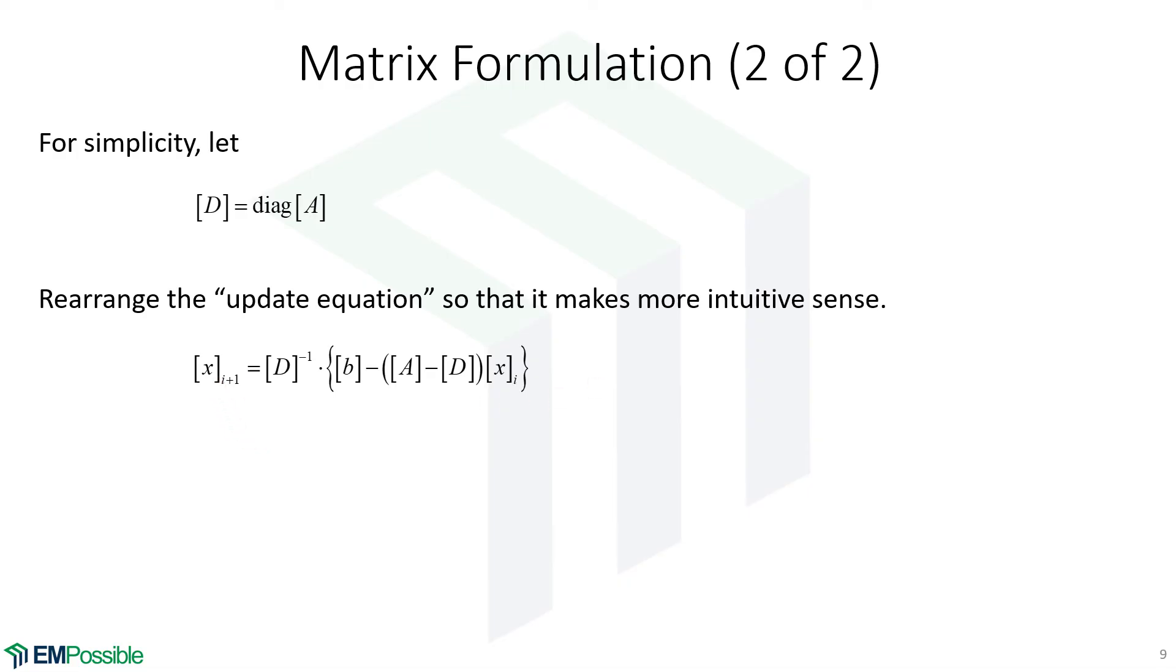We're going to do some algebra on this to put it in a slightly different form. The first thing we'll do is just multiply everything out. We've got a bunch of stuff to multiply out. We have what's in parentheses here with this X, and then we have this D inverse. We're going to multiply everything out, and that's where we end up. And we can simplify this a little bit. We see a D inverse D, right? That's the identity matrix, and identity matrix times column vector X, that's just column vector X. So we can write this as just that column vector X plus everything else. So we simplified everything else down to a smaller term.